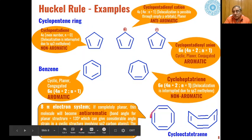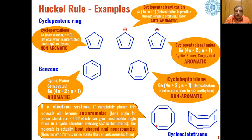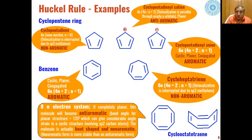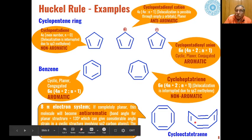Cyclooctatetraene has 8 pi electrons, and if it were planar the molecule would be anti-aromatic. But due to bond angle constraints, it adopts a tub-shaped structure, which makes the molecule non-aromatic. Therefore its stability is greater than the theoretical possibility of an anti-aromatic compound.